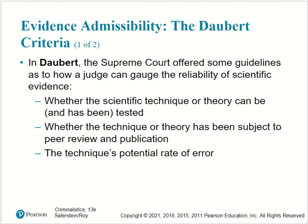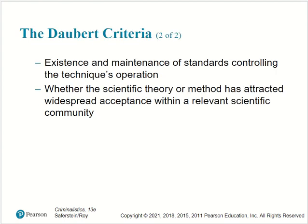Evidence admissibility — the Daubert criteria. In Daubert, the Supreme Court offered some guidelines as to how a judge can gauge the reliability of scientific evidence: whether the scientific technique or theory can and has been tested; whether the technique or theory has been subject to peer review and publication; the technique's potential rate of error; existence and maintenance of standards controlling the technique's operation; and whether the scientific theory or method has attracted widespread acceptance within a relevant scientific community.